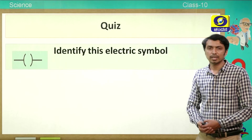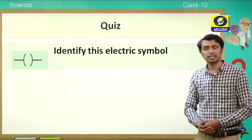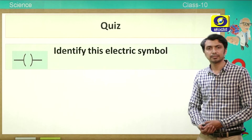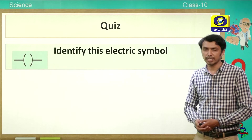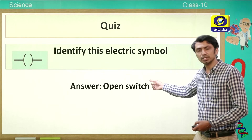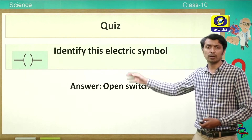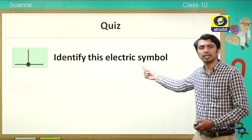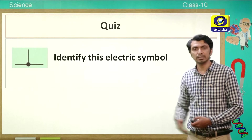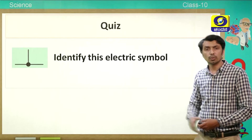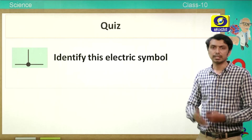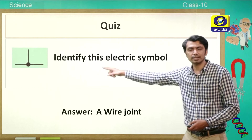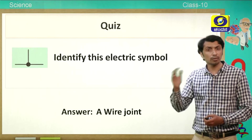Let us have a small quiz. Can you identify this electric symbol? Yes, it is an open switch — meaning an open circuit where current is not flowing. Next question: identify this electric symbol. Those are wires having a joint, meaning the wires are connected — they are not crossing over without joining.